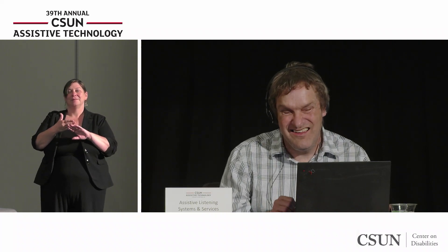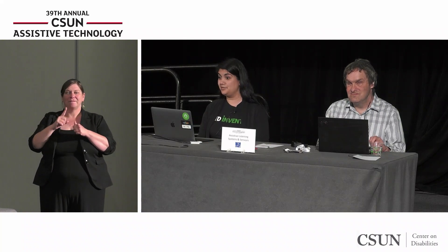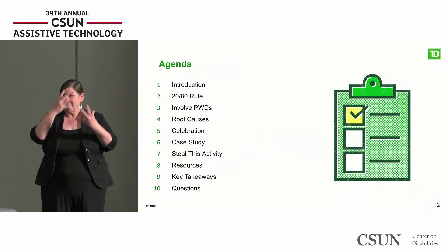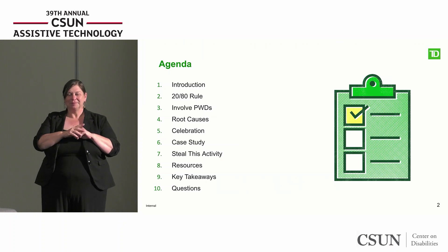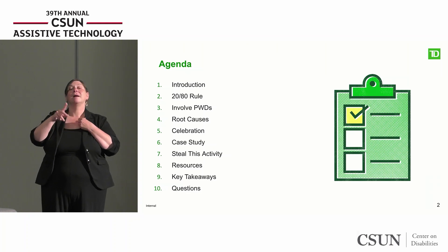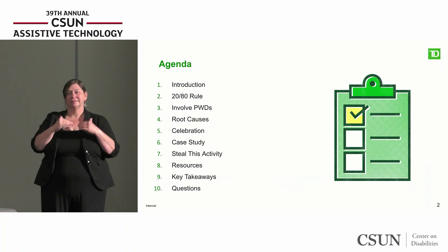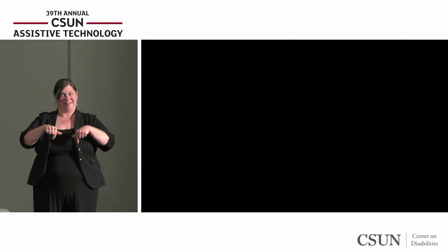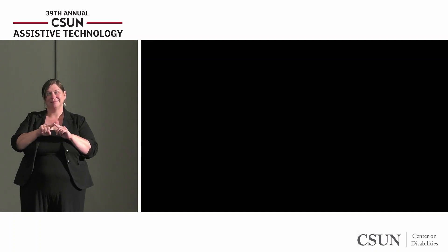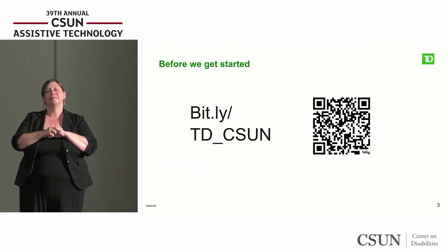Before I toss it over to Brian to start on the first half of our presentation, I'm just going to go through our agenda. We've got a really packed agenda today. We're going to cover a significant amount of work, including the 80-20 rule, how to involve PWDs — persons with disabilities — looking at root causes, and then also some case studies on how we've interacted and integrated this work into what we're doing at TD, along with some things that you can actually steal and use yourself.